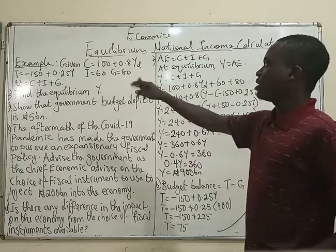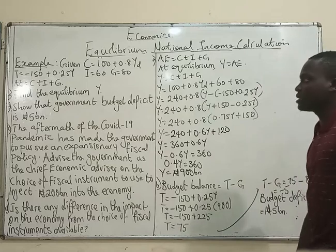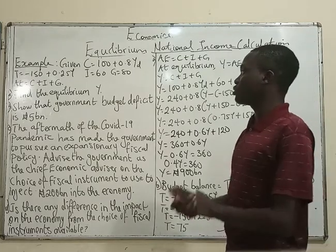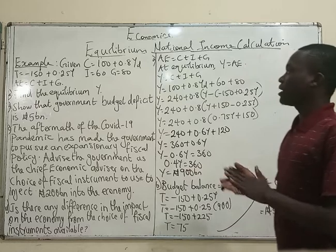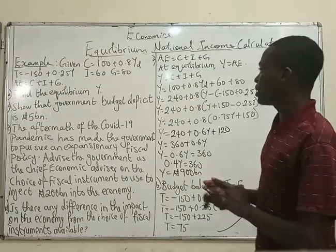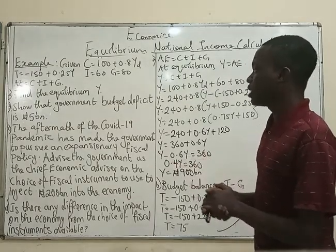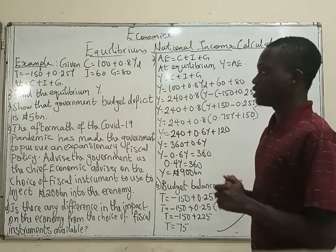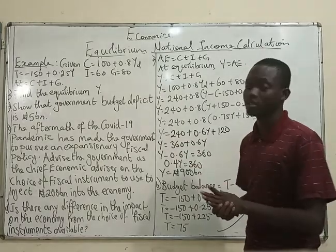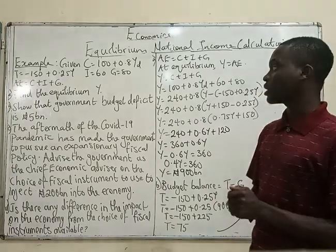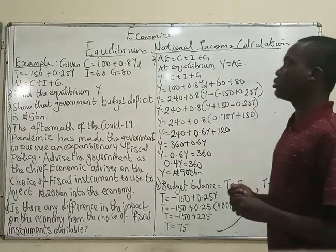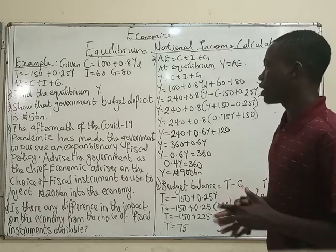So, example: given C equals 100 plus 0.8 YD, tax equals minus 150 plus 0.25Y, I which is private investment equals 60, and government spending equals 80. So A equals C plus I plus G. From this question you can see that this is a closed economy because there is no net export.